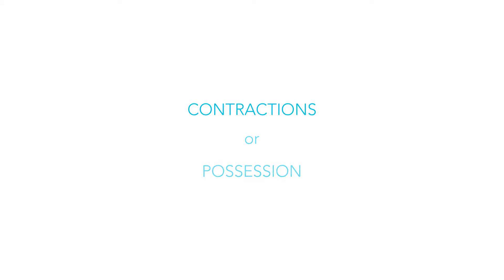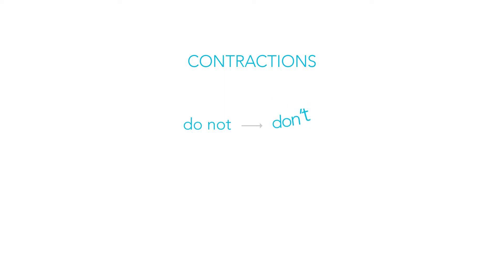A contraction is two words that have been put together to make one word, and a letter or several letters has been removed. For example, 'do not' becomes 'don't.' The apostrophe is put in place where the letter has been removed. So in 'don't,' the O was removed from 'not,' and the apostrophe goes in its place.